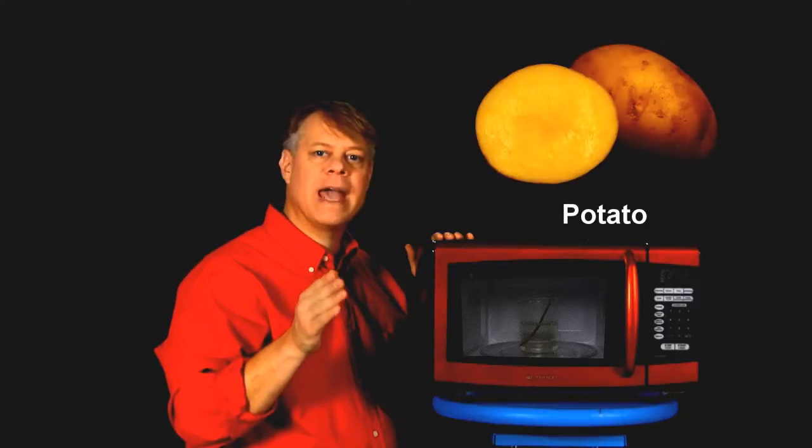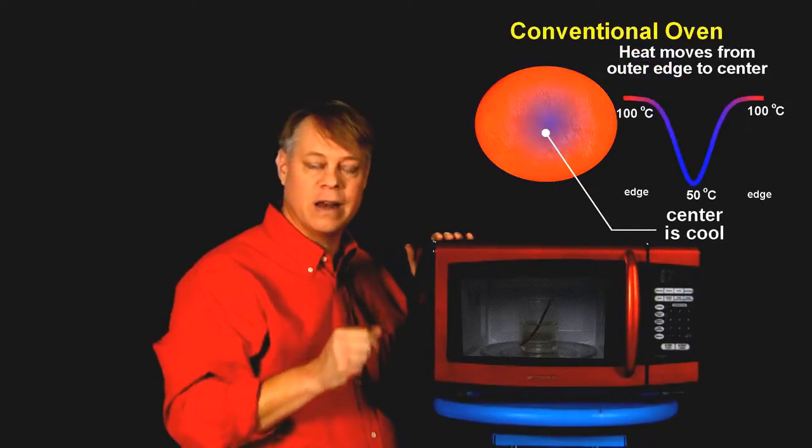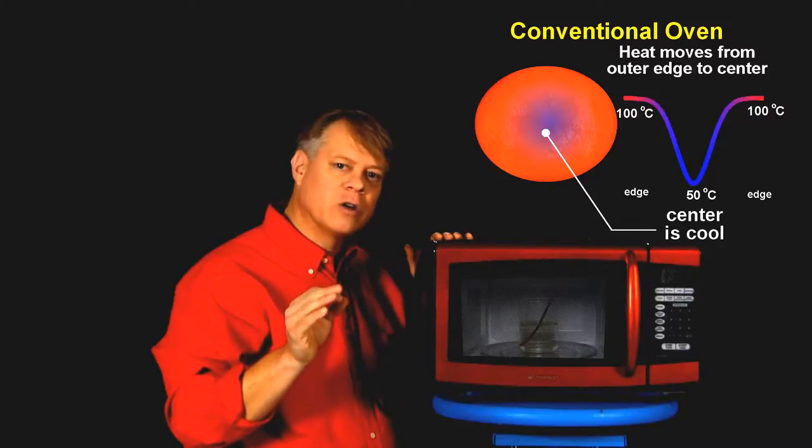In a traditional oven or stove, we heat food by placing a pan on a burner or in the oven where the walls radiate heat, which cooks the outside of the food. The insides cook when heat transfers from the surface of the food to its interior.